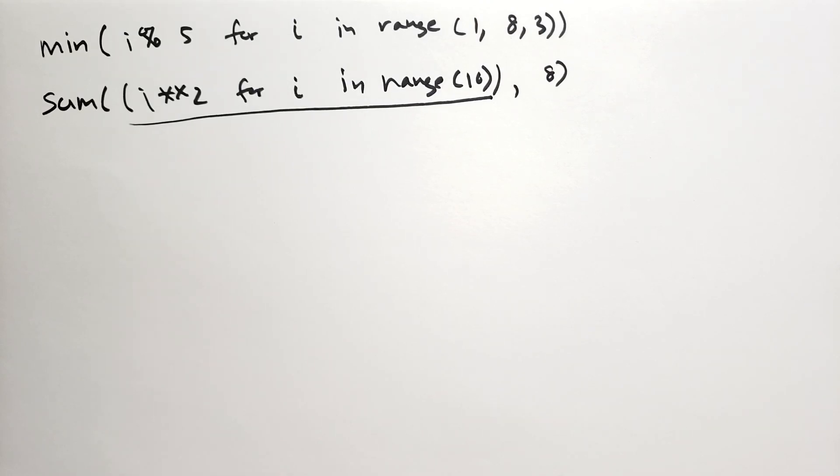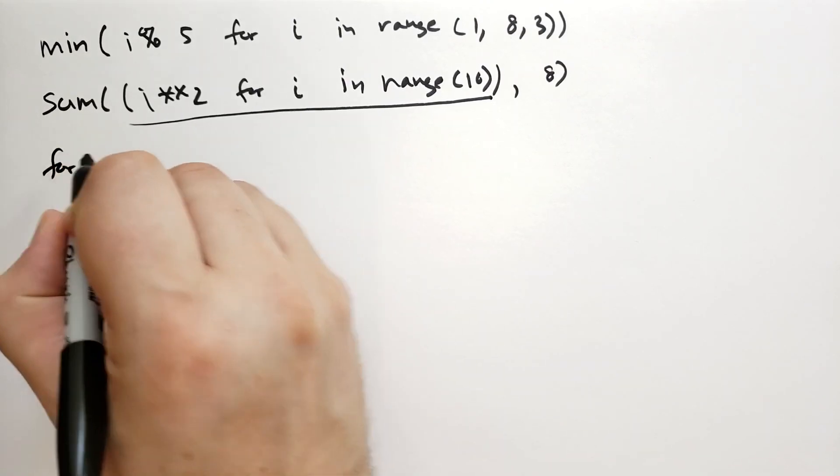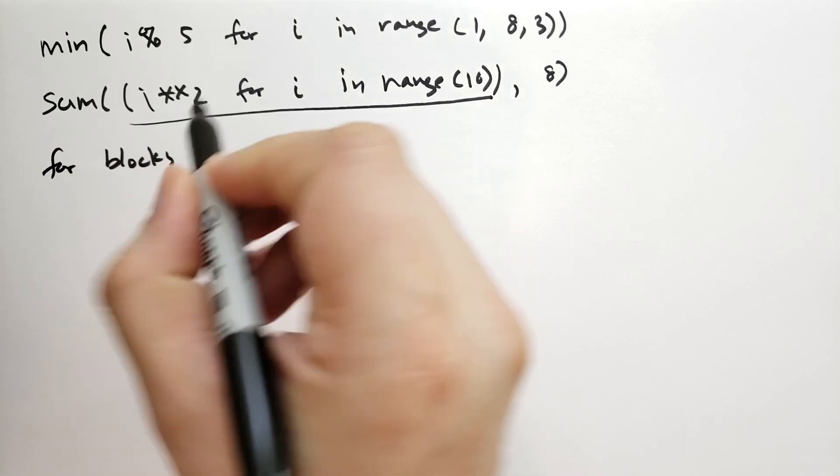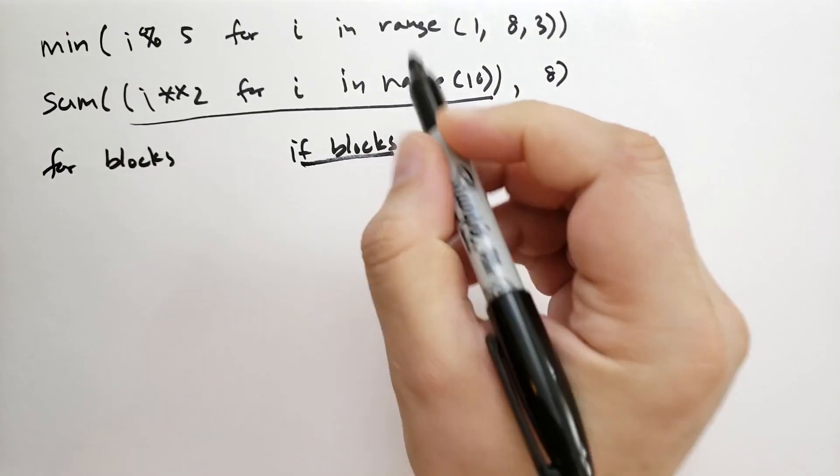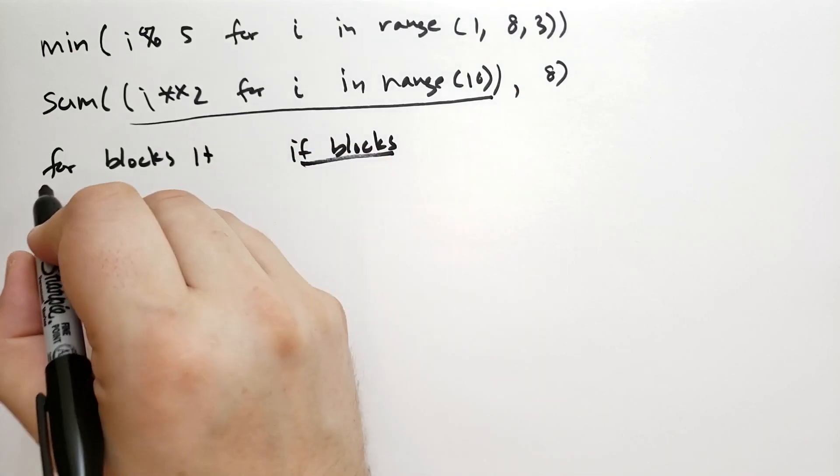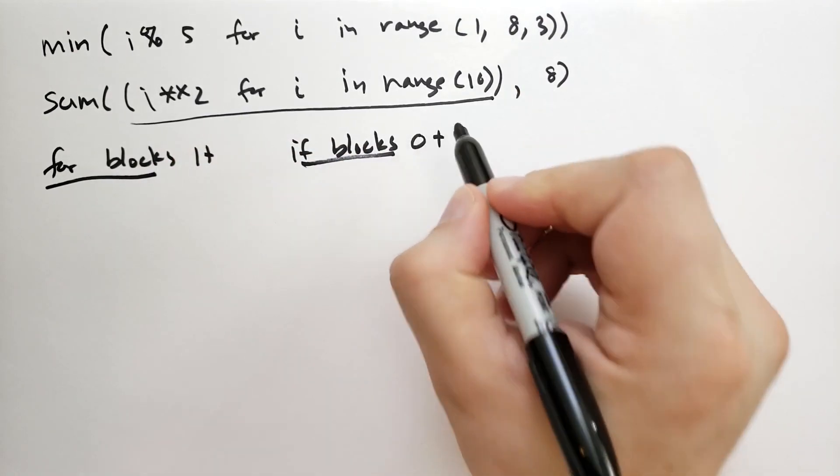A comprehension is made up of several for blocks, and optionally, if blocks. You must have one or more for blocks, but you can have zero or more if blocks.